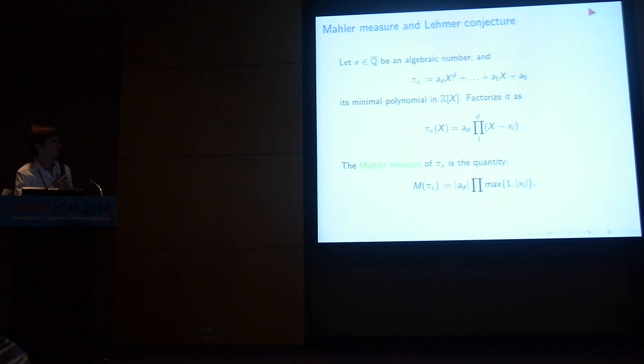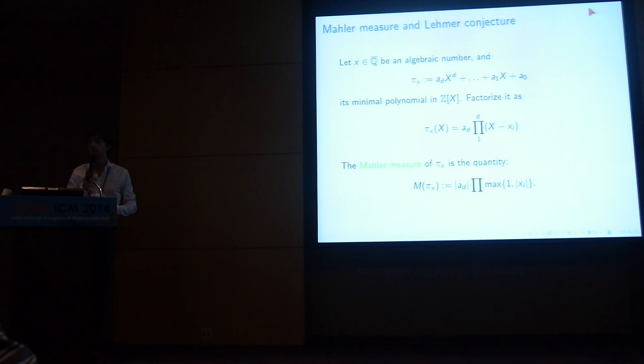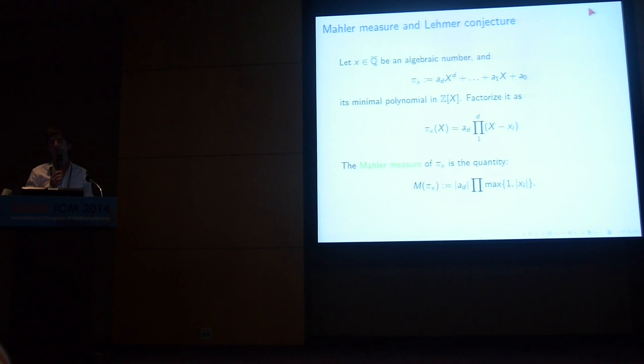This brings me to the definition of the Mahler measure and the Lehmer conjecture. Let x be an algebraic number and let P(x) be its minimal polynomial with integer coefficients — factorize it. The Mahler measure is this quantity: the absolute value of the leading coefficient multiplied by the product of the roots that lie outside the unit circle.